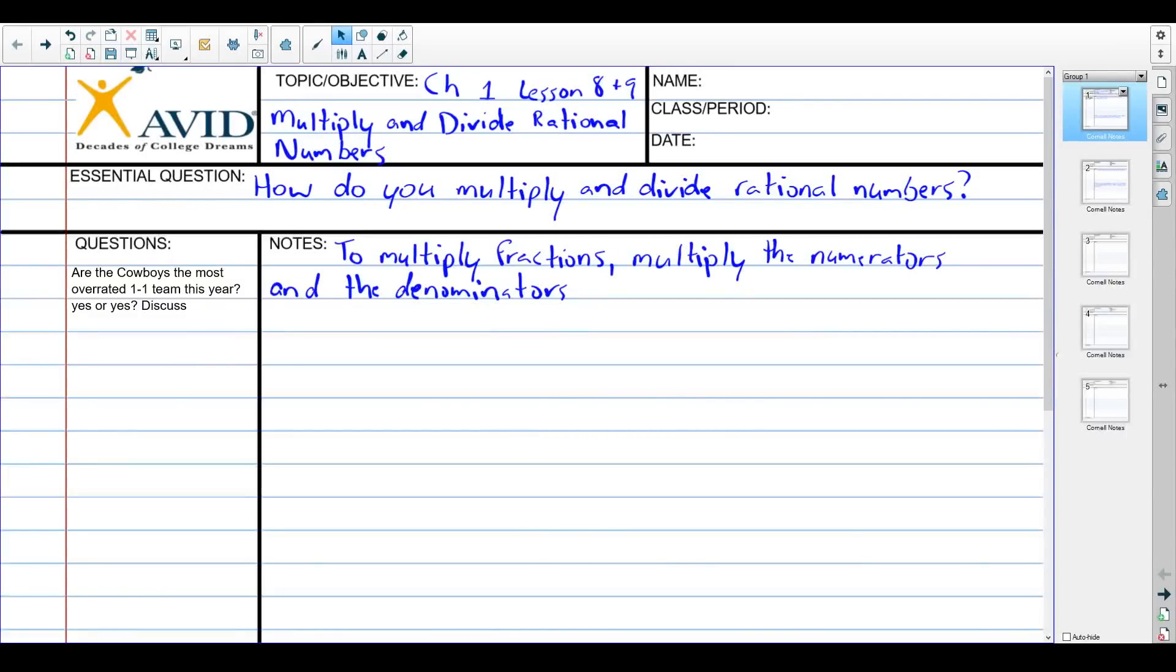The teacher mentions getting extra homework because the Cowboys were losing, but says it's okay and forgives the yelling. The central question for the lesson is: how do we multiply and divide rational numbers? Most specifically, fractions.